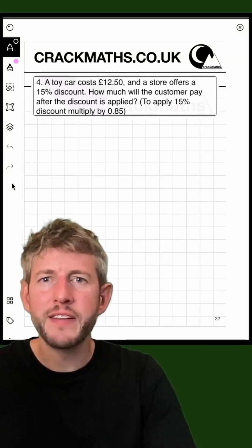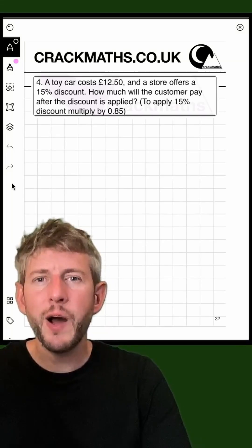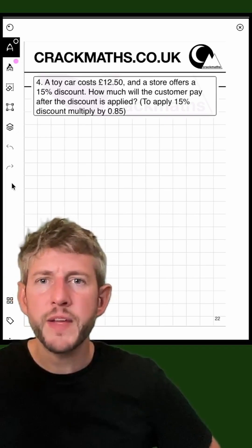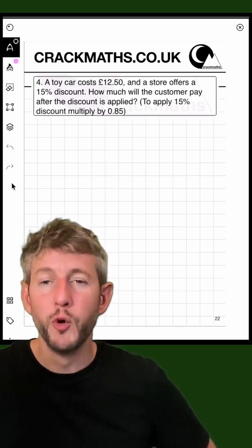A toy car costs £12.50 and a store offers a 15% discount. How much will the customer pay after the discount is applied? To apply 15% discount, you multiply by 0.85.